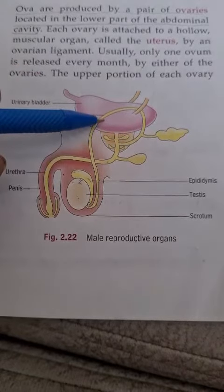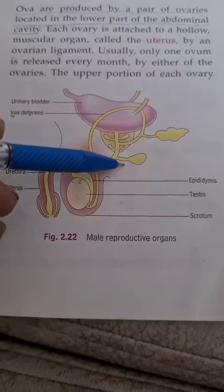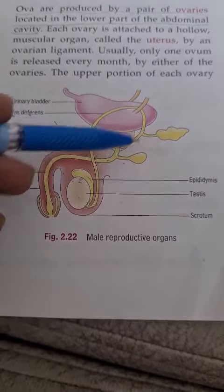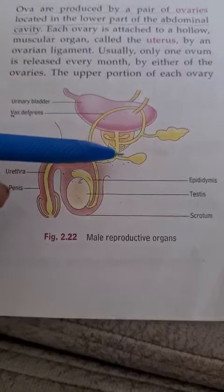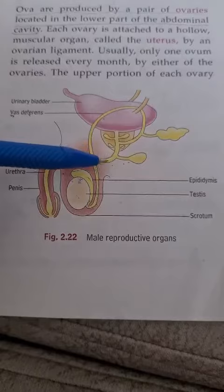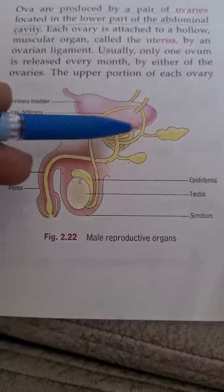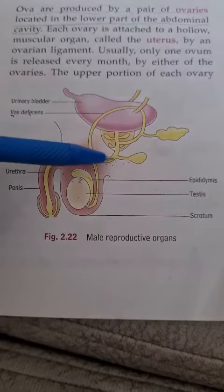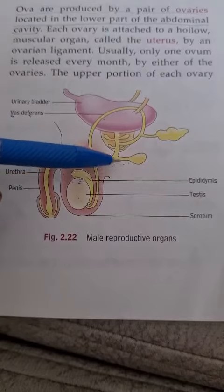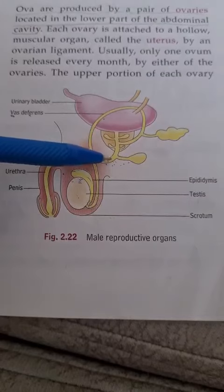On the way towards the urethra, three pairs of accessory glands are also attached, which add milky fluid to the sperms. This mixture of sperms with milky fluid secreted by these accessory glands is called semen. The semen activates the sperm and lubricates the sperm for their function.